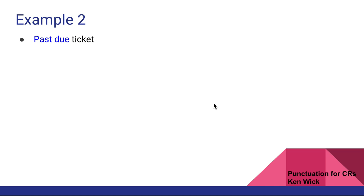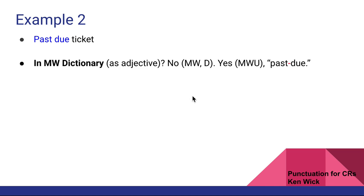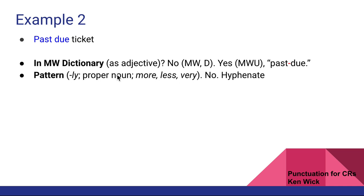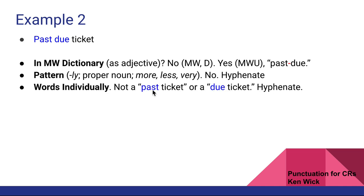Example two: pass-through ticket. It's not found in the free dictionary or dictionary.com, but it is found in the unabridged, where it is hyphenated — you could stop there. If you didn't have the unabridged, the pattern check shows it's not one of the non-hyphenated patterns, so you hyphenate. Individually, it's not a 'pass ticket' or a 'due ticket,' so you hyphenate. Answer: pass-through ticket. Four people voted for the hyphen, none against.